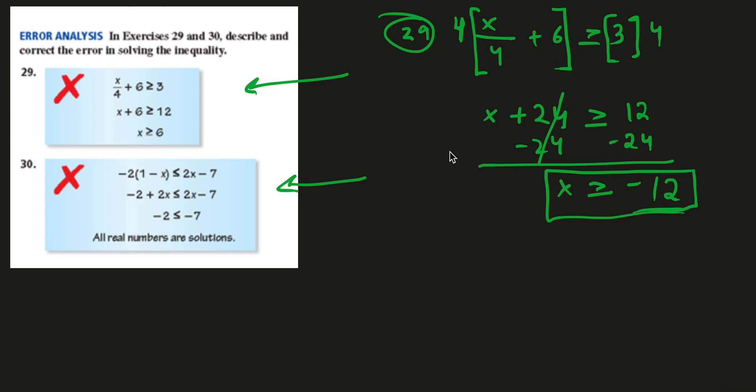Remember, if we were to multiply, if this was like negative x over 4 plus 6 or something like that, it was greater than or equal to 3, we could multiply by negative 4, but then we'd have to switch, right? We'd have to switch. We'd have to change this to less than or equal to, and so on and so forth. But we don't have to worry about that here. It's a straightforward question.